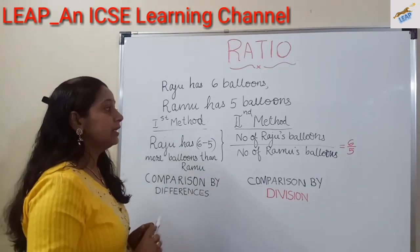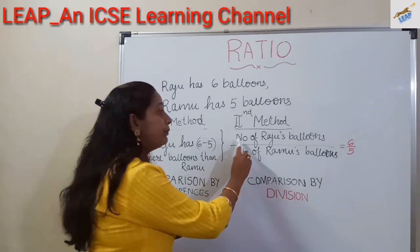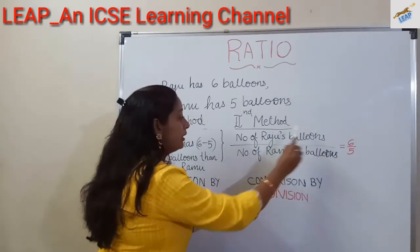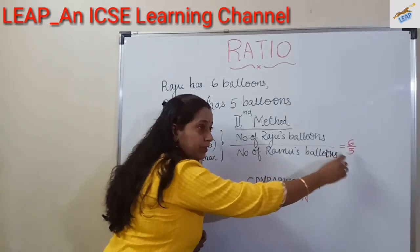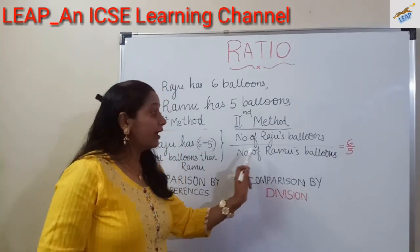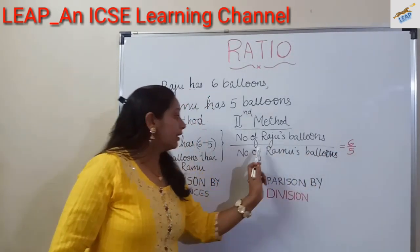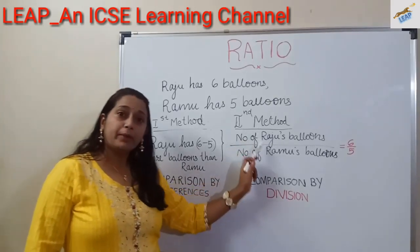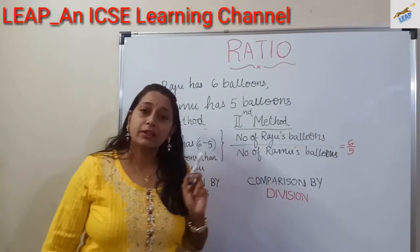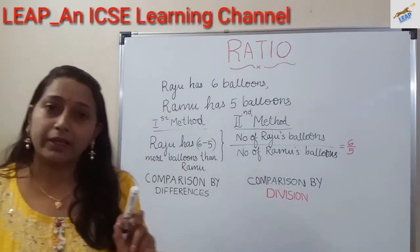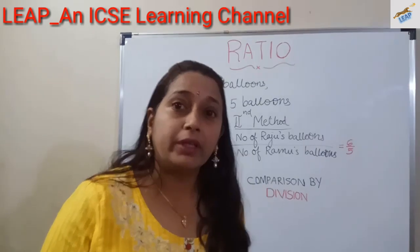In the second method, we can compare in a different way. The number of Riaju's balloons divided by the number of the other's balloons is equal to 6 by 5. That is, Riaju has 6 by 5 more balloons. Here we compare the two quantities by division. When we compare two quantities by division, we can say that we are forming ratios.